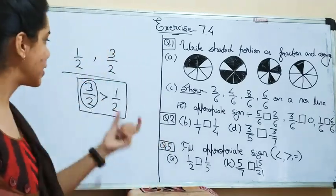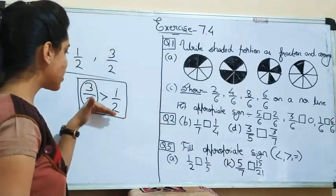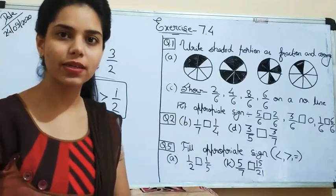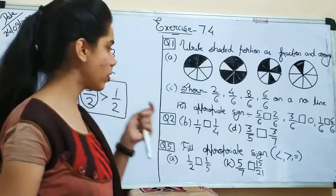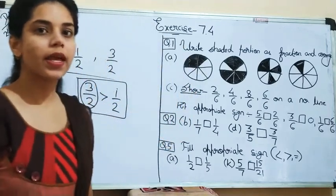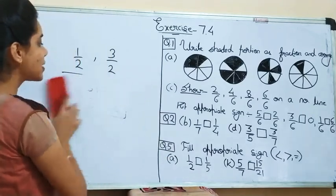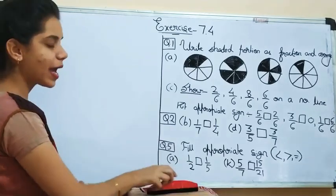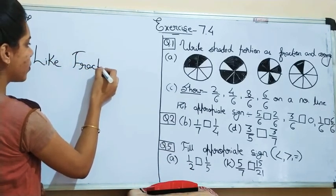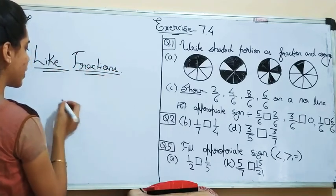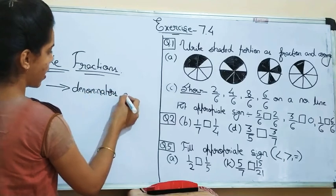In this way we can compare these two fractions. What we have learnt: if the denominators of two fractions are equal, we will see the numerator. The number which is greater — that whole fraction will be greater than the other fraction. What we call this quantity if their denominators are equal? We call that quantity as like fractions. What are like fractions? Whose denominators are equal — denominators are same, you can say.